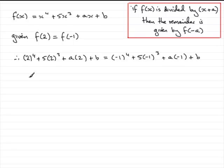Now if we tidy the left hand side up, what we've got is 16 and then this term comes out at 40. Then we've got plus 2a and then plus b. On the right hand side here we've got 1 and then minus 5 and minus an a and plus b.